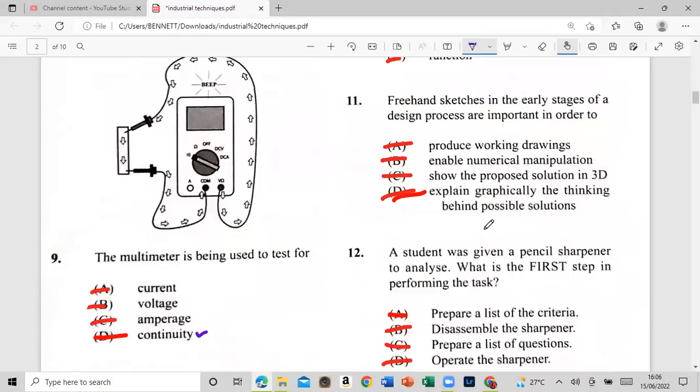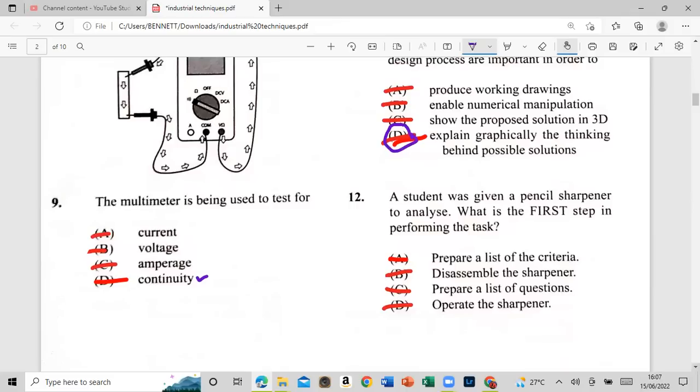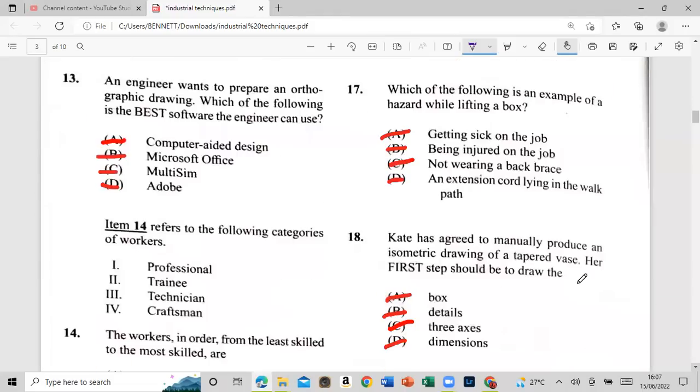And by all guys, eat the light, water, latest paper. This, you know, free and sketches in the early stages of a design process are important in order to explain the graphical, explain graphically the thinking behind possible solution. So that's A D. Number 12: a student was given a pencil sharpener to analyze. What is your first step in performing class? And that's a pure list of the criteria. Hit the like button guys. Type in the answer if you see that. Watch it, if you see it's not ready watch that. An engineer wants to prepare an article joint. Which of the following is the best software engineer can be used? Computer-aided, Microsoft Office, Multisim, or Adobe? And that will be A: computer aided design.